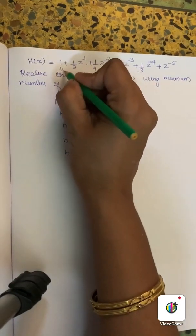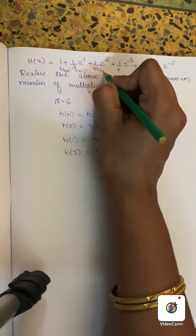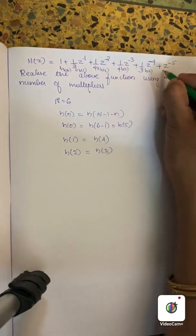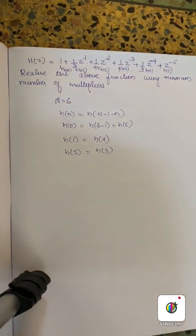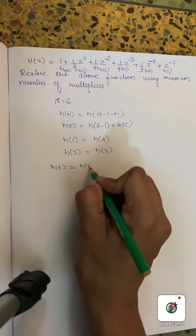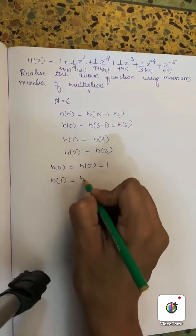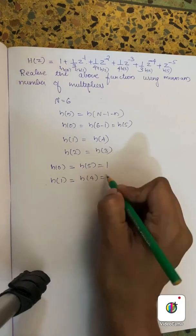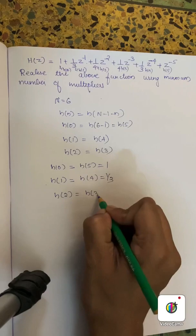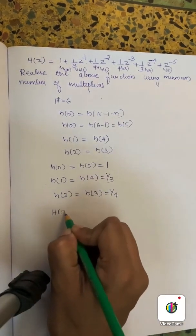We check the linear phase condition: h(n) equal to h(N minus 1 minus n). At n equals 0: h(0) equals h(5). At n equals 1: h(1) equals h(4). At n equals 2: h(2) equals h(3). We label the coefficients: h(0), h(1), h(2), h(3), h(4), h(5).